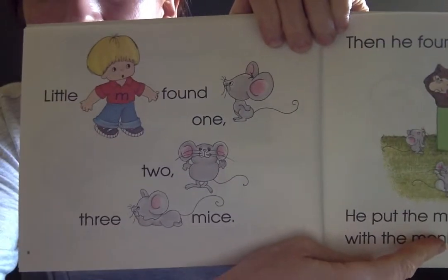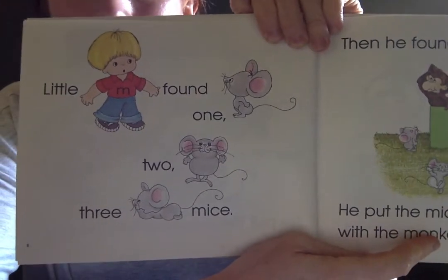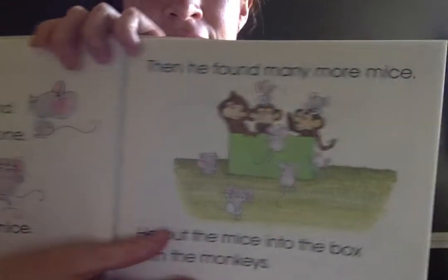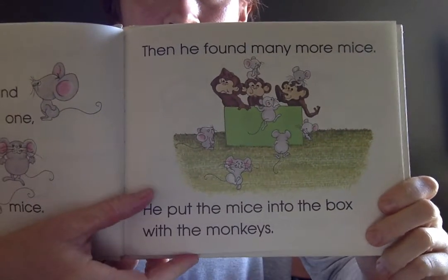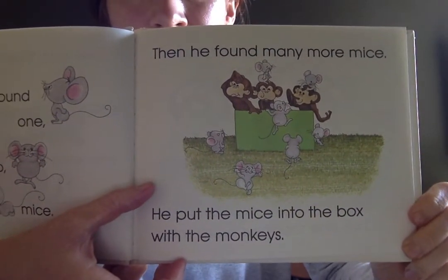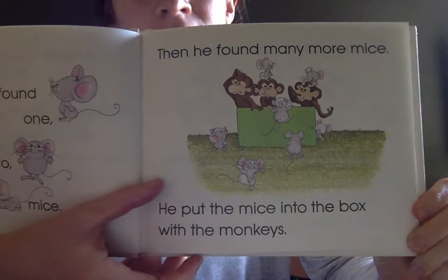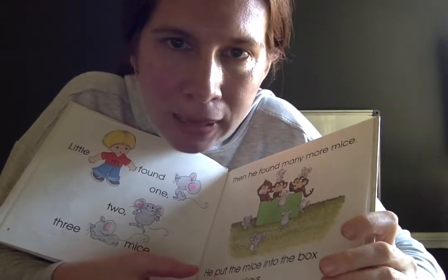Little M found one, two, three mice. Then he found many more mice. He put the mice into the box with the monkeys. Mice. Monkeys.